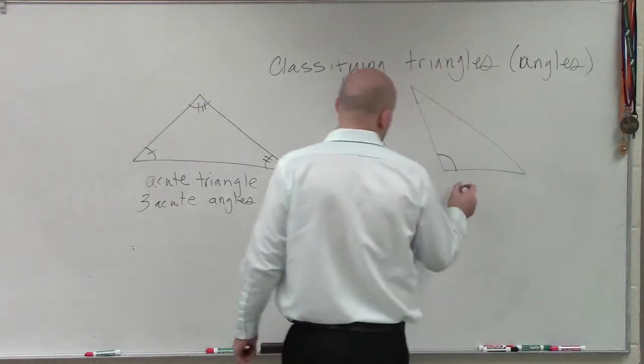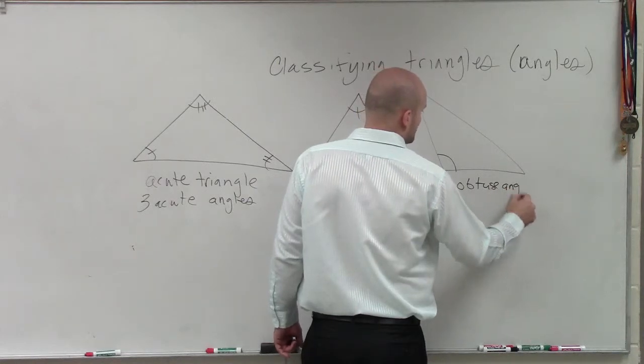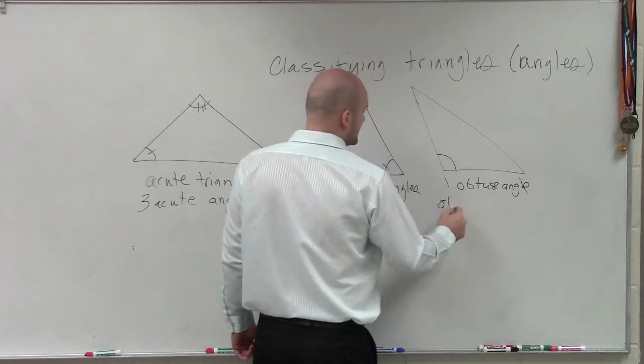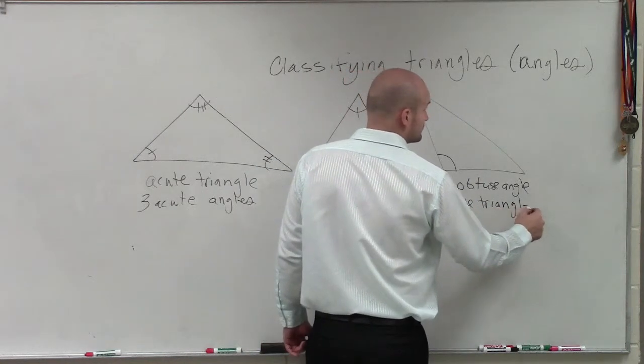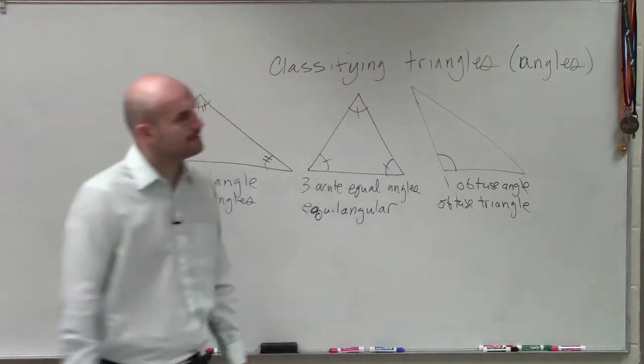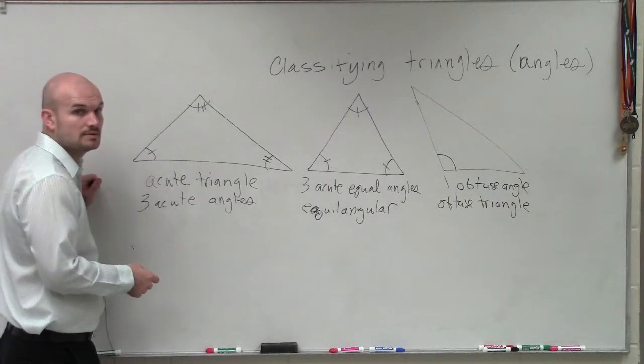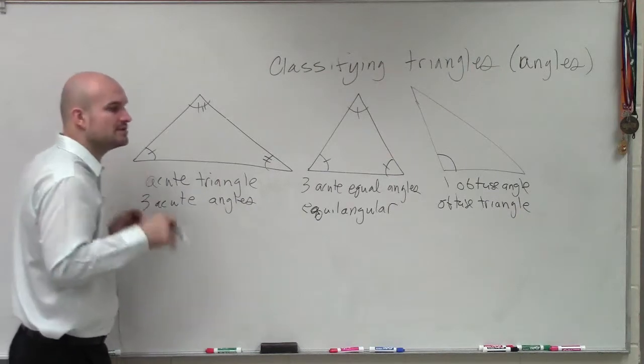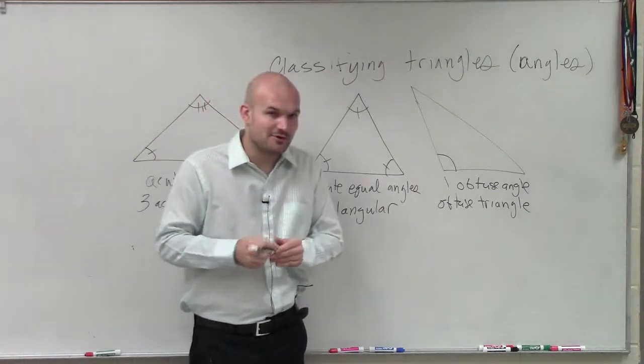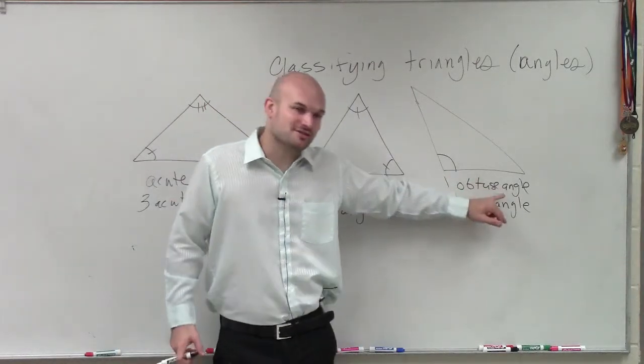So, Jake, when you're writing this down, if you have one obtuse angle, we call it an obtuse triangle. Can you have a triangle with two obtuse angles, maybe? Well, that's what I was just explaining. And that's why, when you're throwing that paper ball, you probably missed our conversation.